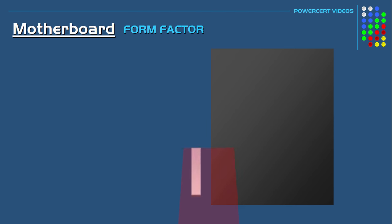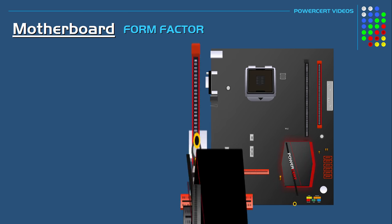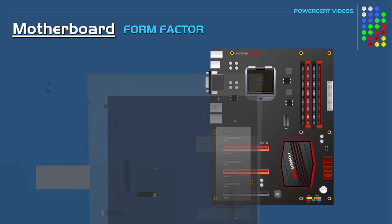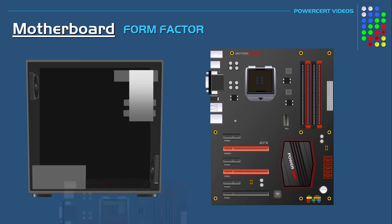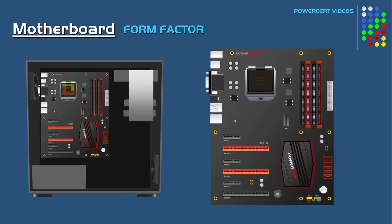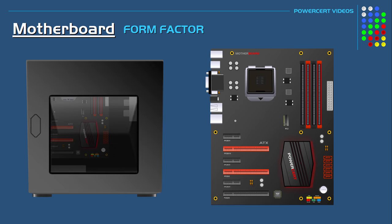In this video we're going to talk about motherboard form factors. The motherboard is the main component of a computer. It's basically a large circuit board that's mounted into a computer case and it's where all the computer components connect to. Motherboards come in different shapes and sizes and this is known as a form factor.